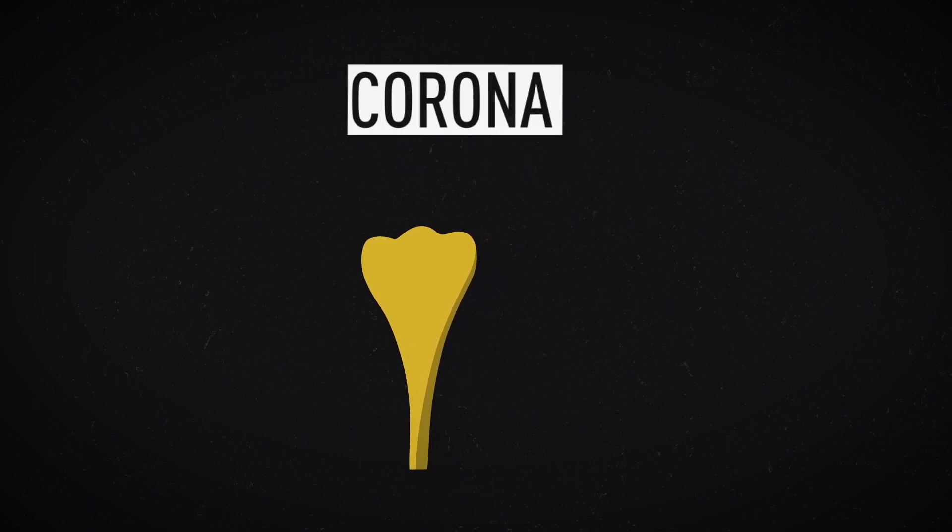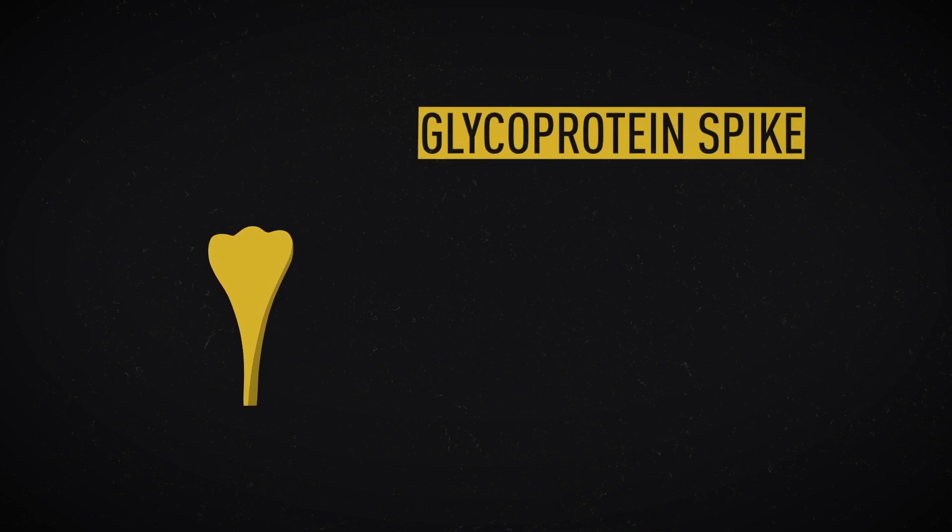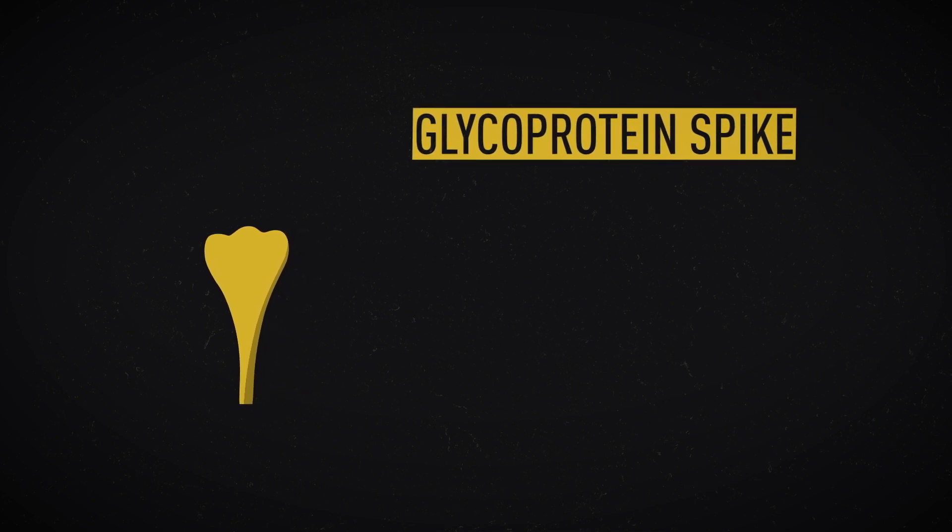Similar to hemagglutinin in influenza, this spike protein mediates entry of coronavirus into human cells. This is the lock to which the antibody key will bind.